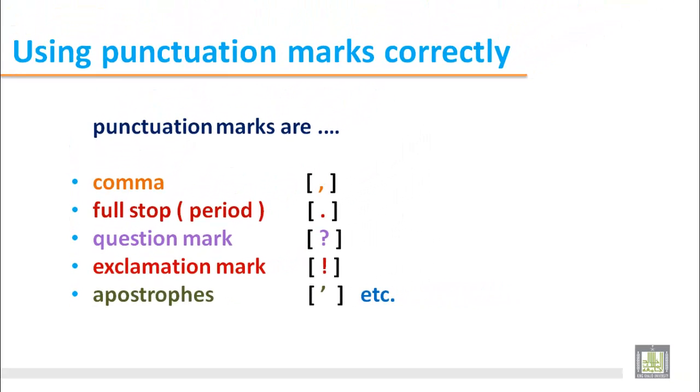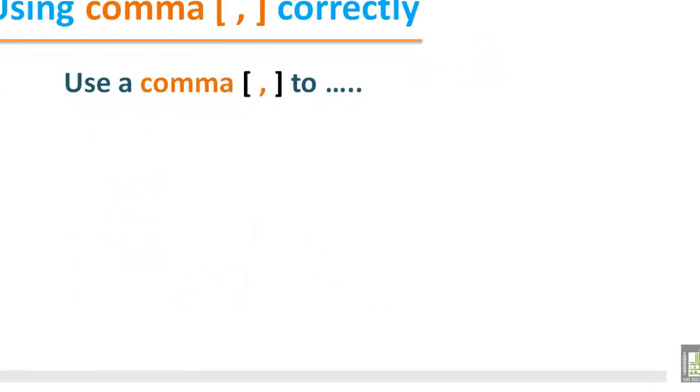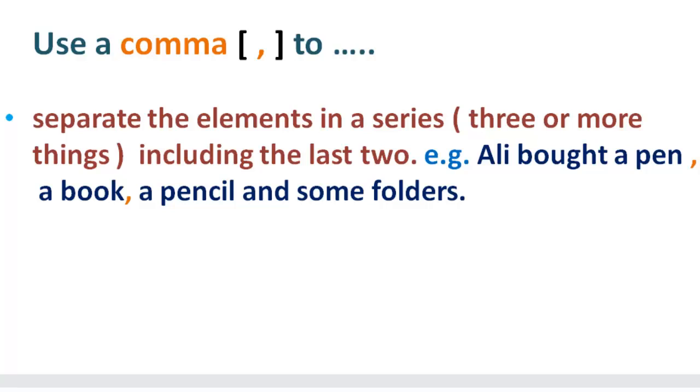Now we will discuss the use of comma in writing sentences. Using comma correctly: Use a comma to separate the elements in a series, three or more things, including the last two. Here is an example, we can see Ali bought a pen, a book, a pencil, and some folders.